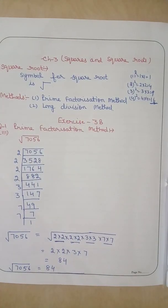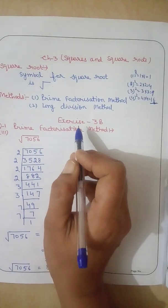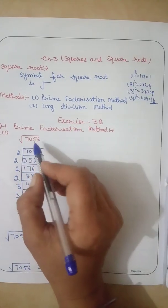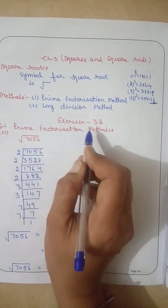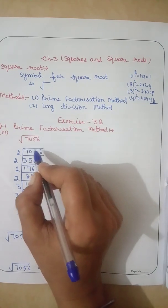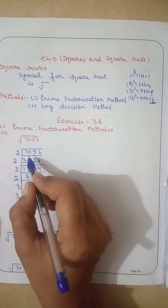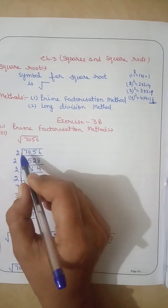Prime Factorization Method. It is exercise 3B, question 1, third part. Using Prime Factorization Method, find square root of 7056. Now firstly, we will make the prime factors. Divide by 2.